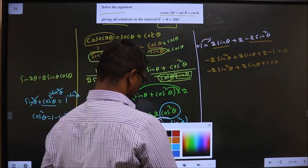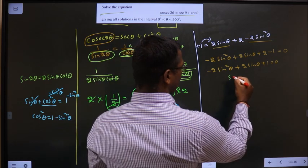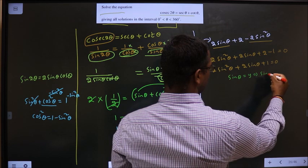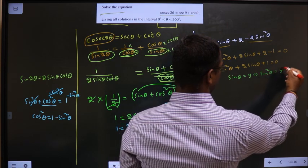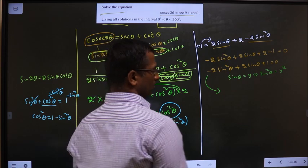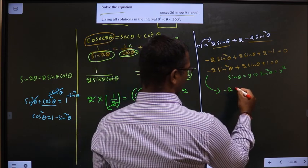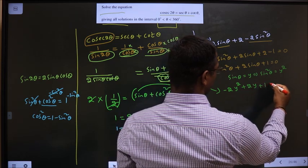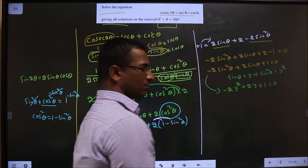Take sin θ equal to y. If I do the square on both sides, I get sin square θ equal to y square. Replace in this equation. What do you get? Minus 2y square plus 2y plus 1 equal to 0.